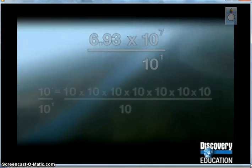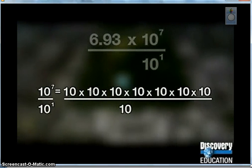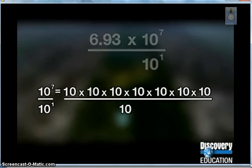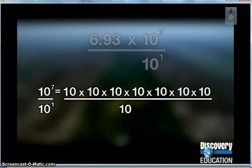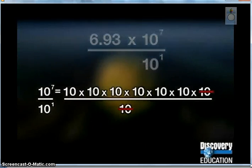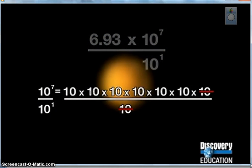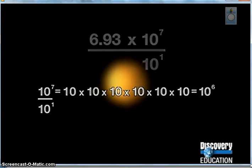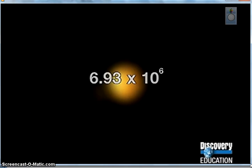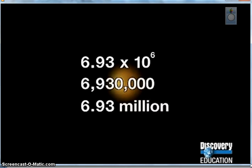9.29 divided by 1.34 is 6.93 to the nearest hundredth. Then, 10 to the seventh divided by 10 is the same as 10 used 7 times in multiplication, divided by 10. Canceling out one of the tens, you get 10 used 6 times to multiply, or 10 to the sixth. The ratio is 6.93 times 10 to the sixth, or 6.93 million.